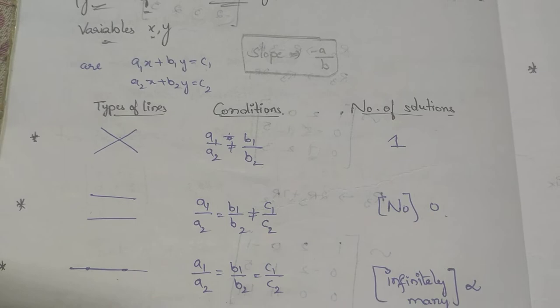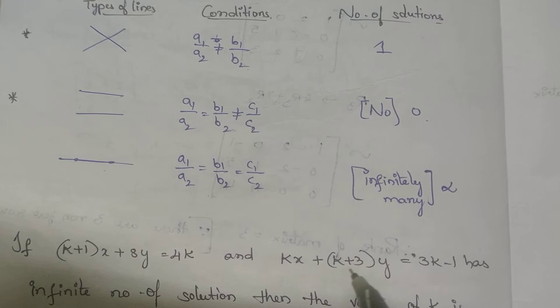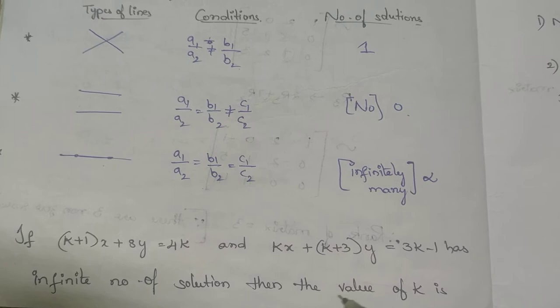Next question based on this: if (k+1)x + 8y = 4k and kx + (k+3)y = 3k−1 has an infinite number of solutions, then find the value of k. Infinite number of solutions means a1/a2 = b1/b2 = c1/c2.